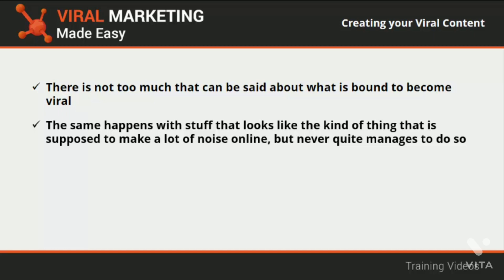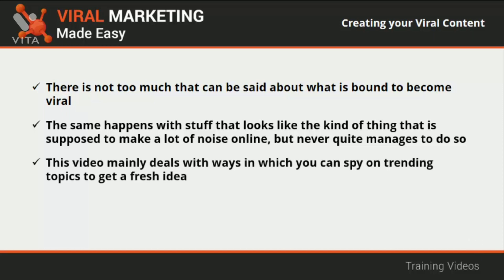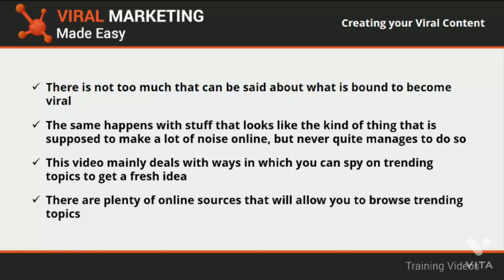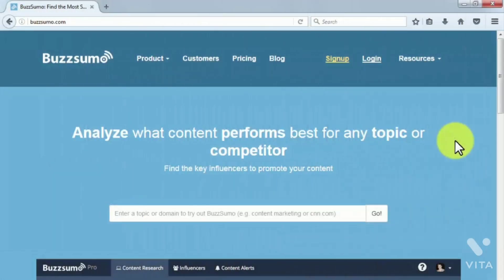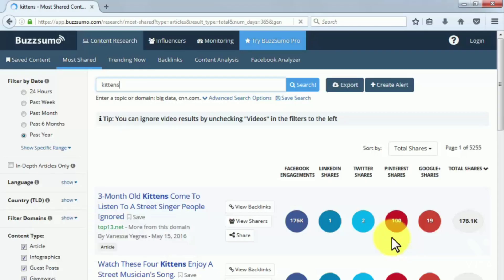The good news is that there is so much content online that you can peek at what can become viral to get ideas before creating a would-be viral post. This video deals with ways in which you can spy on trending topics to get fresh ideas at any given moment in time, because something that is in everybody's mouth today won't be there tomorrow. We recommend you use a site called BuzzSumo.com — this website allows its visitors to use any type of keyword to see how it relates to trending topics. The first results you'll see are the posts that have become viral on social media, and you'll be able to filter results by date, language, country, and content type.